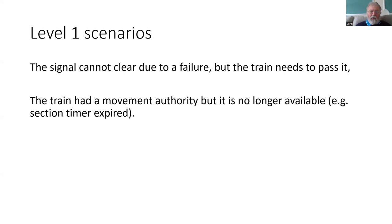So in level one this might occur because you can't clear a signal, but the train needs to go past. It's going to be authorised by the driver, and without having some process to do it, when the driver passes the signal the train would get tripped. Another example is where you have section timers and the train did have a movement authority, but for some reason it's no longer available — that could be a section timer, or another command which has caused the train to lose the existing movement authority.